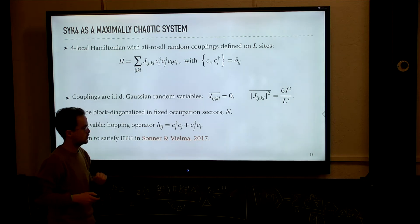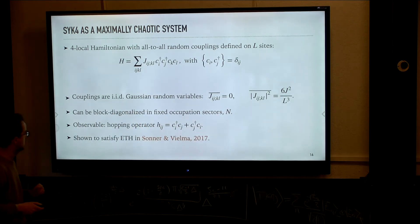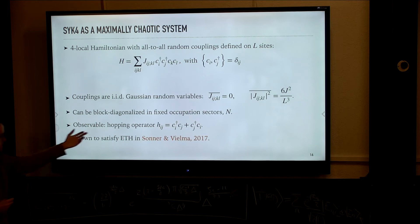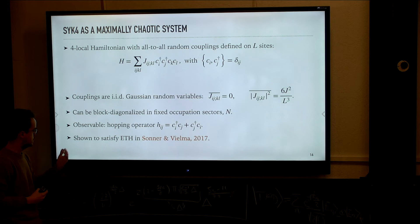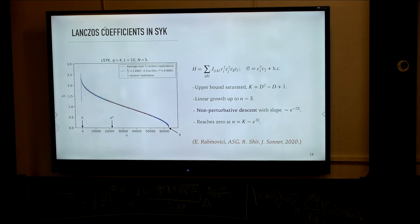These couplings are Gaussian variables with zero mean and a variance that scales with some parameter J. We can work in sectors of a fixed occupation number. We took a certain operator which is non-extensive in system size — a hopping operator — which was shown to satisfy the eigenstate thermalization hypothesis, for example in works by Cotler and his former student Manuel Vielma. This is the result for the Lanczos coefficients in this system.